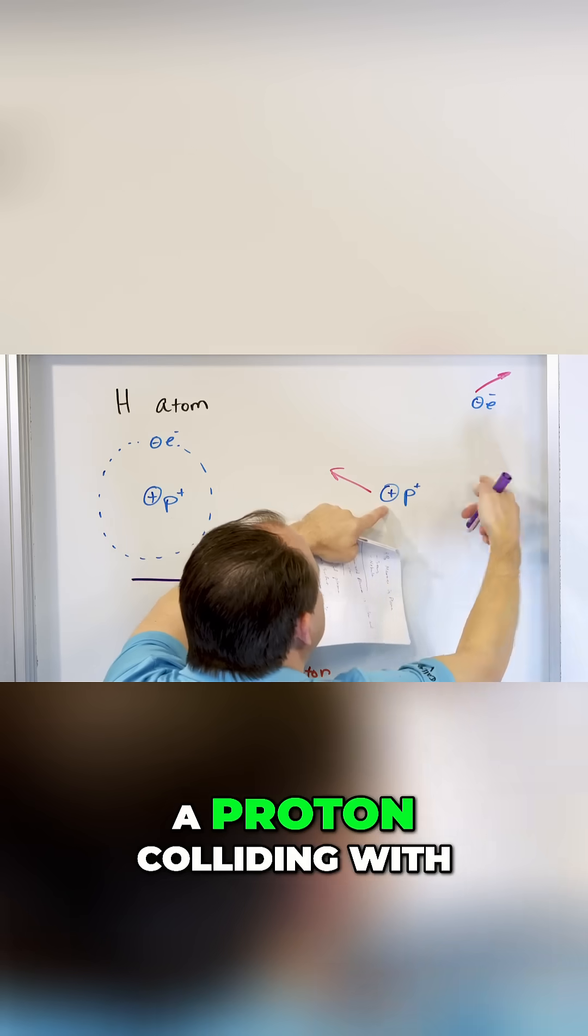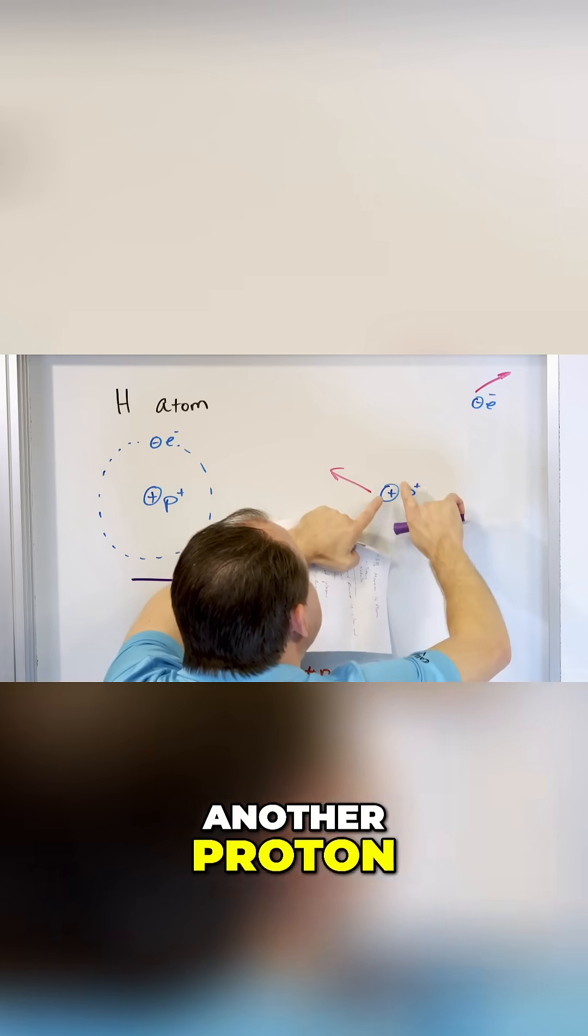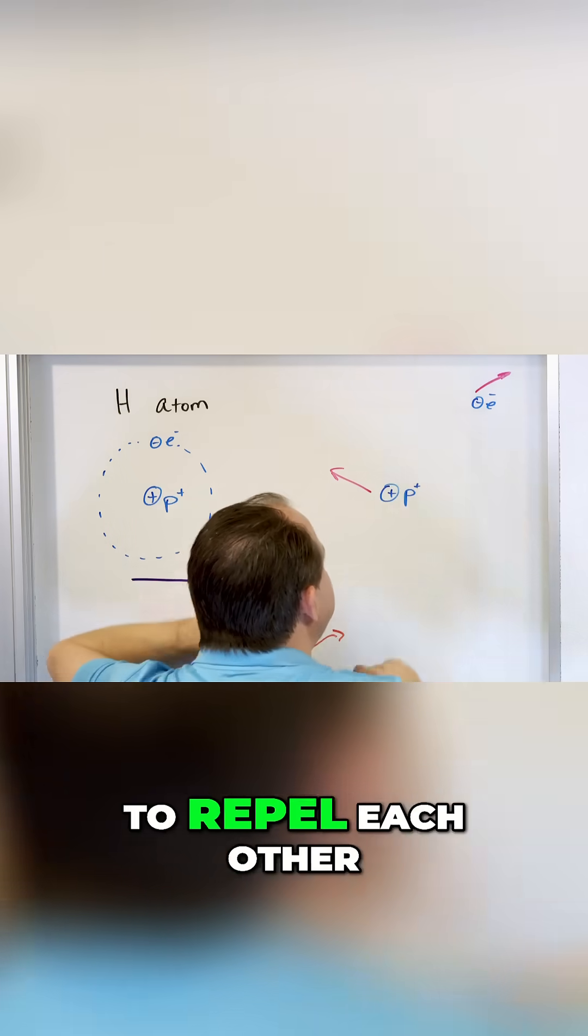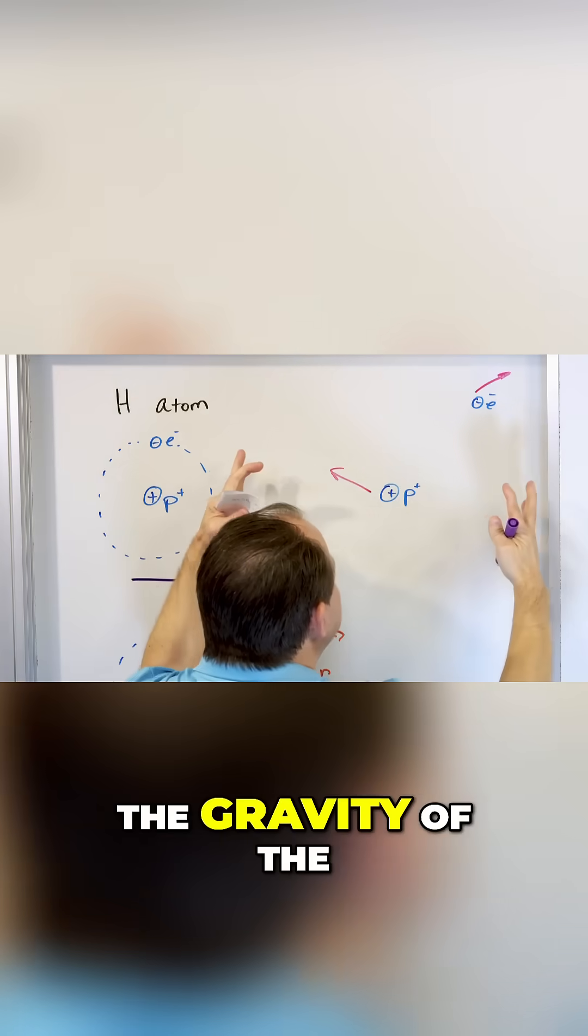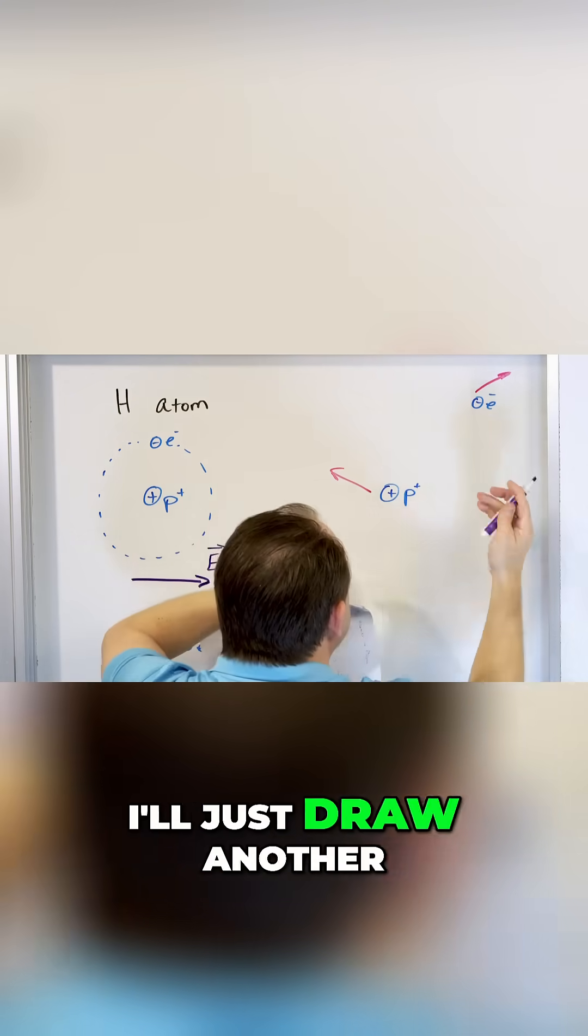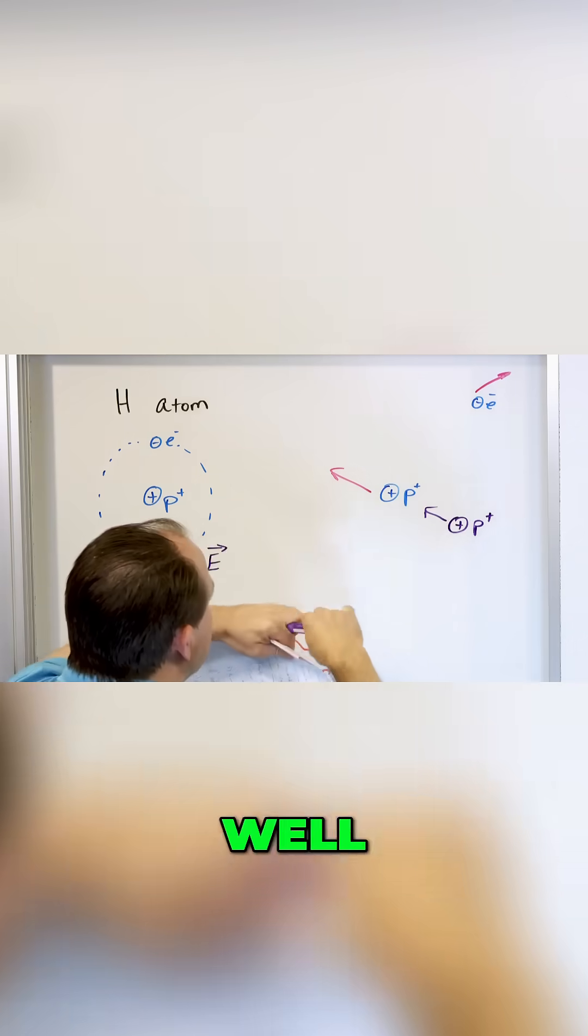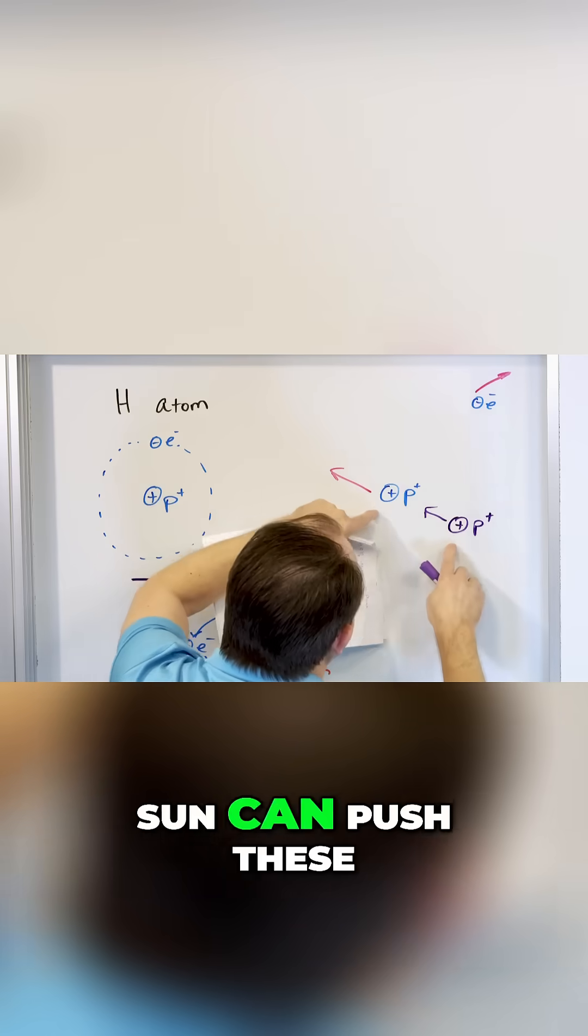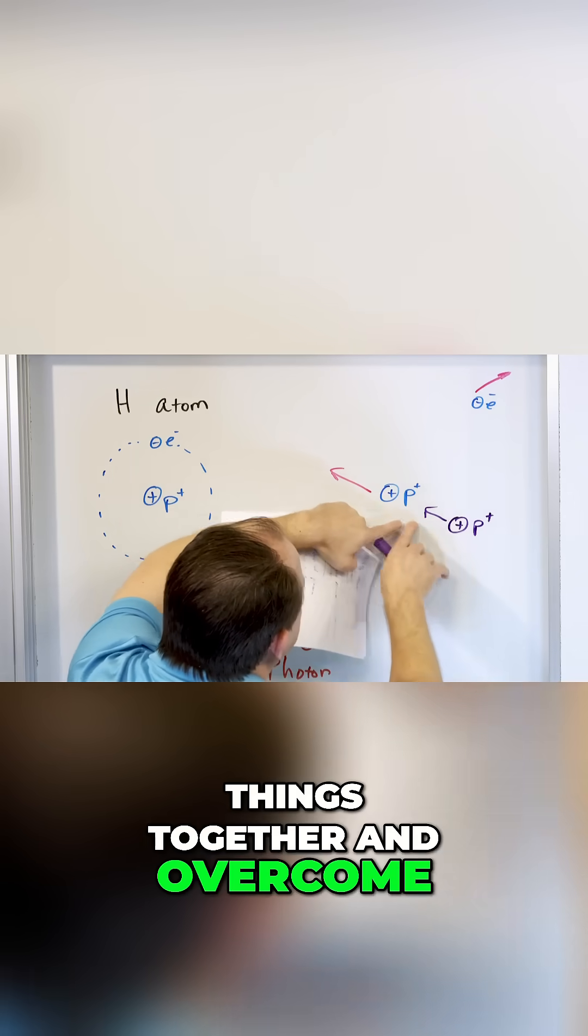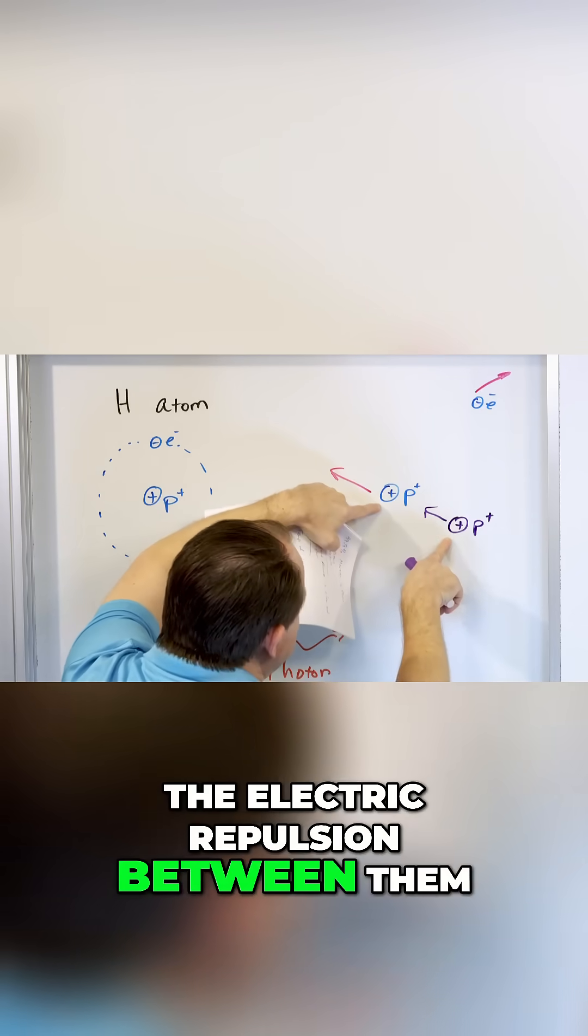Every time you have a proton colliding with another proton, they're two positive charges and they want to repel each other. Well, the gravity of the Sun will take two protons. I'll just draw another one here. Here's another proton. Let's say that it's going this way, right? Well, it's going to collide. Well, the gravity of the Sun can push these things together and overcome the electric repulsion between them.